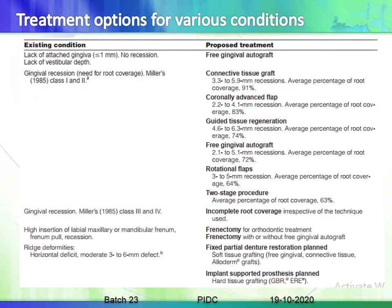For treatment options: if there is a lack of attached gingiva with no recession and lack of vestibular depth, a free gingival autograft is indicated. For gingival recession Class 1 or Class 2, options include connective tissue graft, coronally advanced flap, guided tissue regeneration, free gingival autograft, rotational flaps, and two-stage procedures. The highest percentage of root coverage success has been recorded with the connective tissue graft.